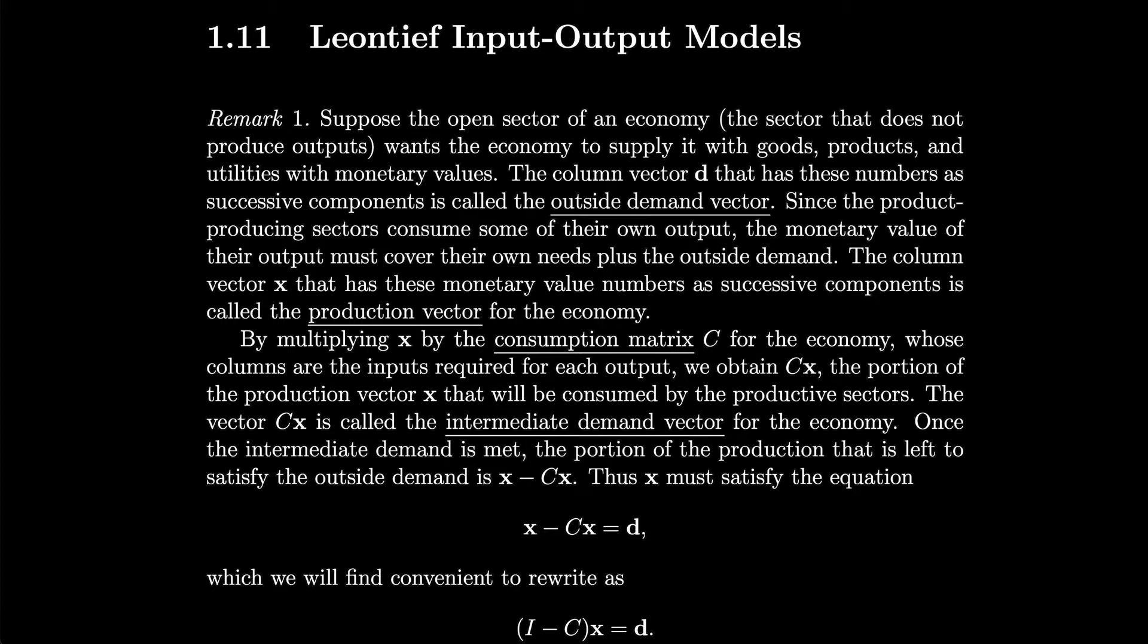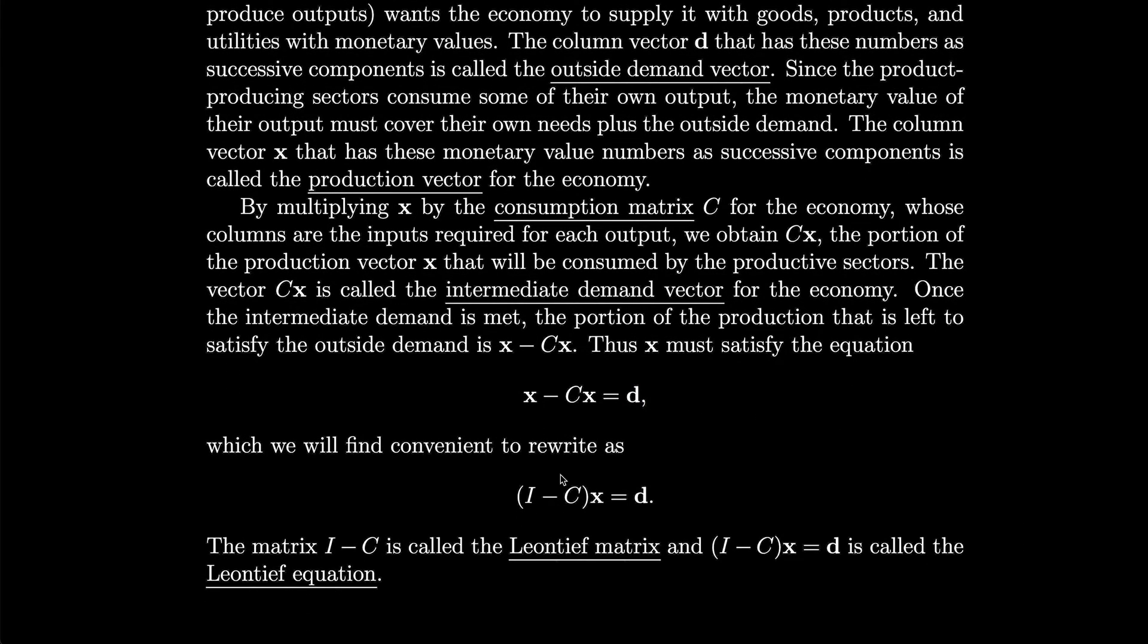By multiplying x by the consumption matrix C for the economy, whose columns are the inputs required for each output, we obtain Cx, the portion of the production vector x that will be consumed by the productive sectors. The vector Cx is called the intermediate demand vector for the economy. Once the intermediate demand is met, the portion of the production that is left to satisfy the outside demand is x minus Cx. So x is how much the production sector is producing, they're consuming Cx, so what they have left has to meet the outside demand d. We will conveniently rewrite that as (I - C)x = d. The matrix I - C is called the Leontief matrix, and (I - C)x = d is called the Leontief equation.